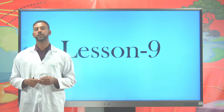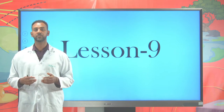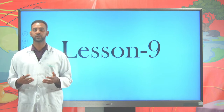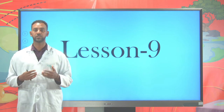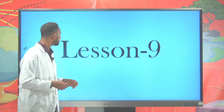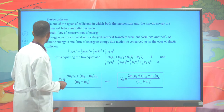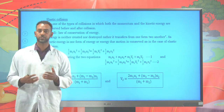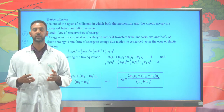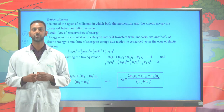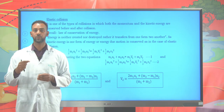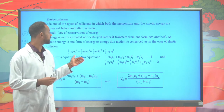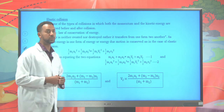Today we'll try to see about the different types of collisions depending on the conservation of energy and momentum. Here we have three types of collisions depending on the law of conservation of energy. The first type is known as elastic collision.